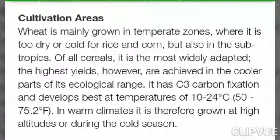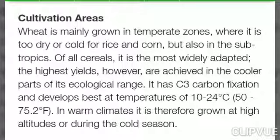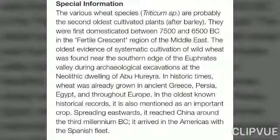Wheat is mainly grown in temperate zones where it is too dry or cold for rice and corn, but also in subtropical areas. It is the most widely adapted cereal with the highest yields achieved in cooler parts of ecological zones. It has C3 carbon fixation and develops best at temperatures of 10°C to 24°C.